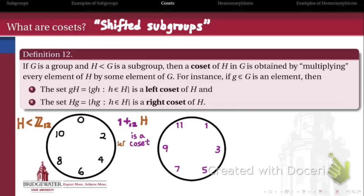Note that it's not a subgroup. It's just a coset, because it's not closed under addition. 1 plus 3 is not an element of this set. It doesn't contain the identity, and it doesn't contain inverses. So it's not a subgroup, but it is a coset.